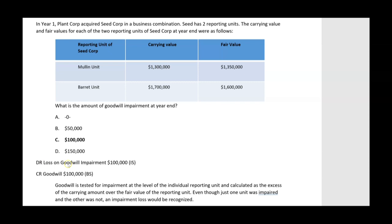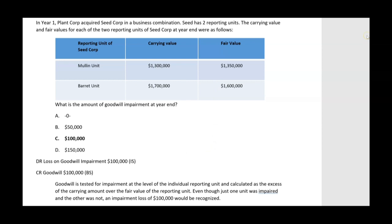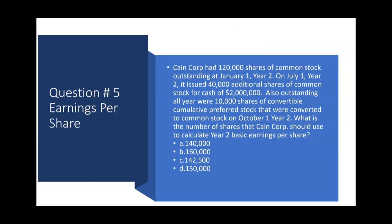The answer is C — $100,000 of goodwill impairment. The journal entry is: debit loss on goodwill impairment $100,000, credit goodwill $100,000. The key: goodwill is tested at the level of the individual reporting unit. We don't combine the two units — if we did, the Mullen unit's $50,000 excess fair value might seem to offset Barrett's impairment, but it doesn't. Each unit stands alone. Anticipating the next question: even if the Mullen unit's fair value were $2 million, the Barrett unit would still have $100,000 of impairment.